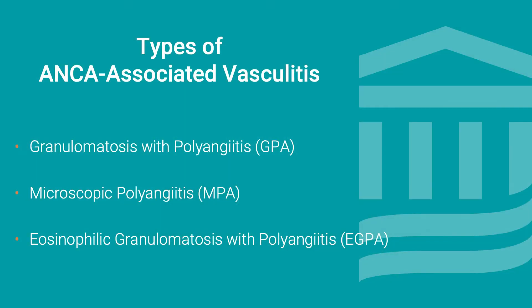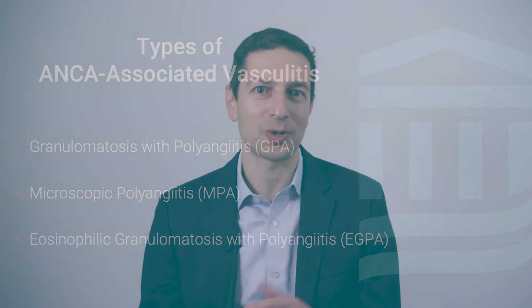The three conditions in this group are called granulomatosis with polyangiitis, GPA for short — this used to be known as Wegener's granulomatosis — microscopic polyangiitis, MPA for short, and eosinophilic granulomatosis with polyangiitis, or eGPA for short, and that condition used to be known as Churg-Strauss syndrome.